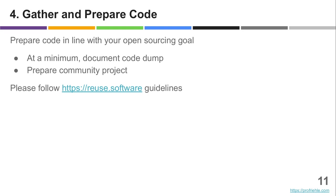So now that you know why you're doing it, which license is proper, and you've figured out that you can actually do it — you need to prepare your code appropriately. You need to put some effort into cleaning it up and documenting it. If you want to do a real community project, there is simply effort coming your way and you need to prepare for that. I recommend you follow the REUSE.software guidelines to make life easy for everyone who wants to use your software.